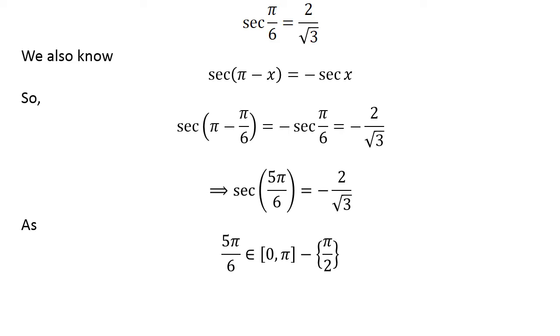As 5 times pi upon 6 lies in the closed interval of 0 and pi except half of pi, 5 times pi upon 6 is the principal value of inverse secant of minus 2 upon square root of 3.